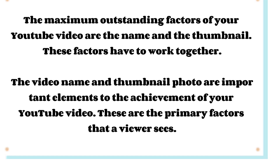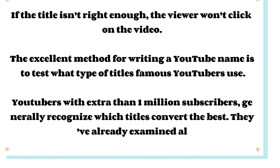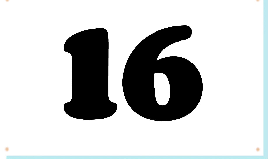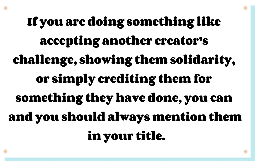Tip 15: Align Your Title and Thumbnail. The title and thumbnail are the most outstanding factors of your YouTube video and must work together. They are the primary elements a viewer sees — if the title isn't compelling, the viewer won't click. Study what titles famous YouTubers with over 1 million subscribers use, as they've already tested what converts best. Tip 16: Mentioning a Fellow Creator. If you're accepting another creator's challenge, showing solidarity, or crediting them, you can and should mention them in your title.